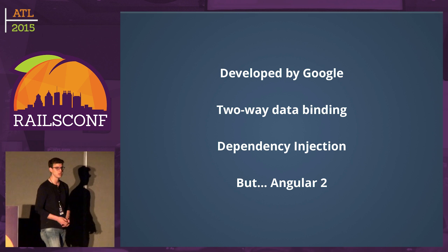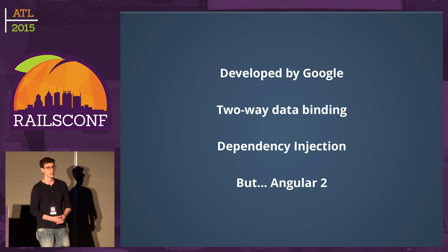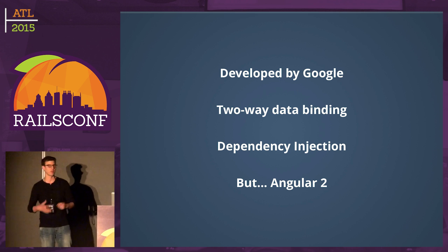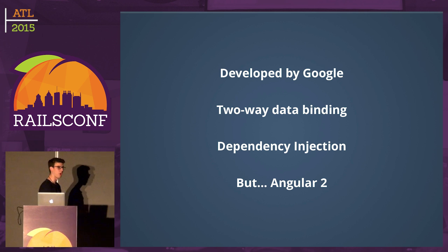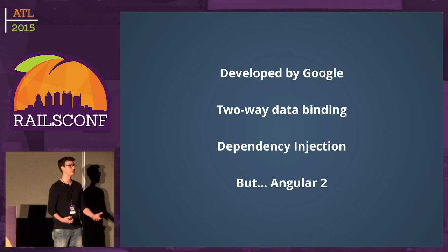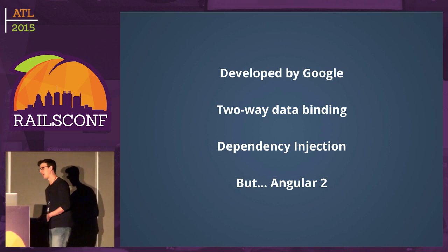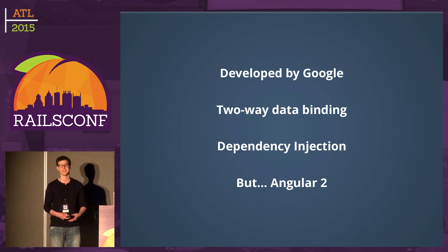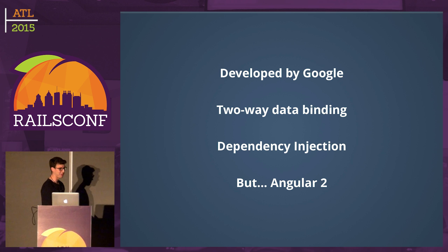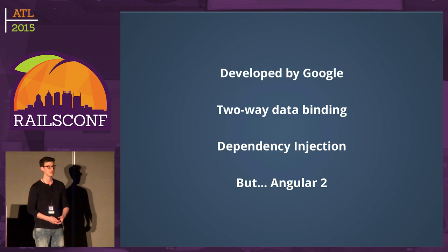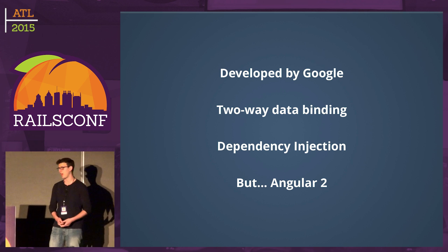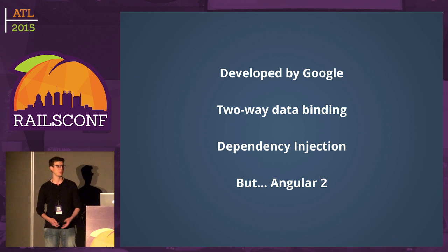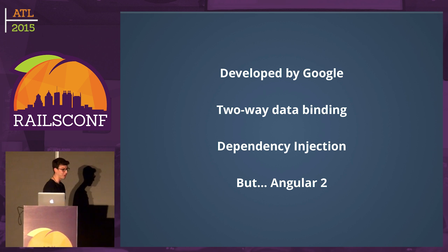Angular is developed by Google. It has two-way data binding at its core: when your model changes, your view changes; when your view changes, your model changes — with no glue code required. Dependency injection is built into its heart. However, Angular 2 is coming, and it is a completely different framework from Angular 1, both syntactically and philosophically.